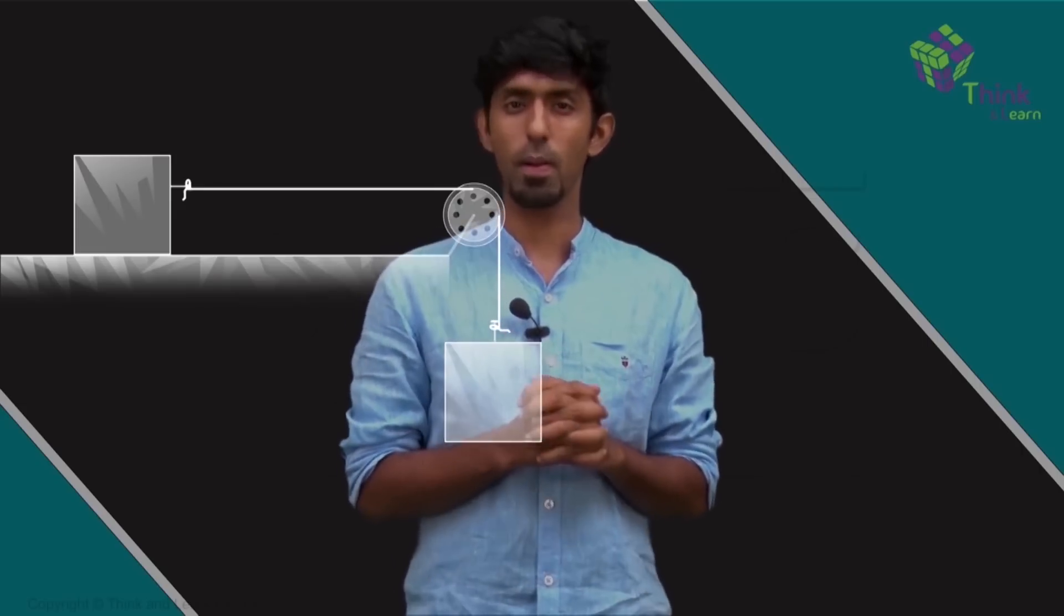Now we saw something with a string alone. Let's bring our next element and put these two together. So let's say I have a block resting on a frictionless plane and there is a string attached to it. But now it passes over a pulley, goes down and has another block attached to it.